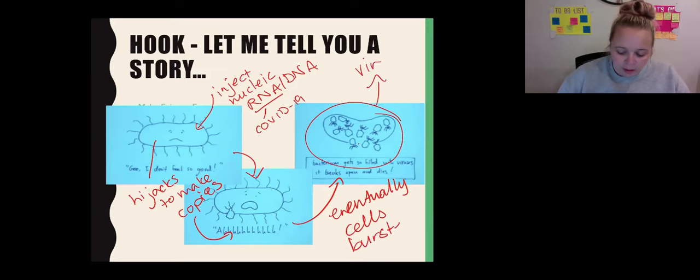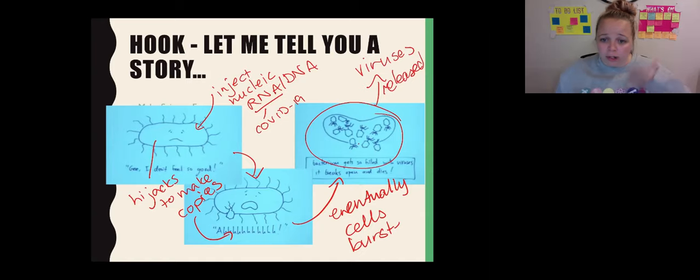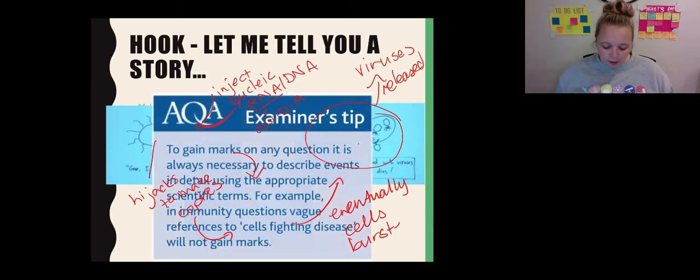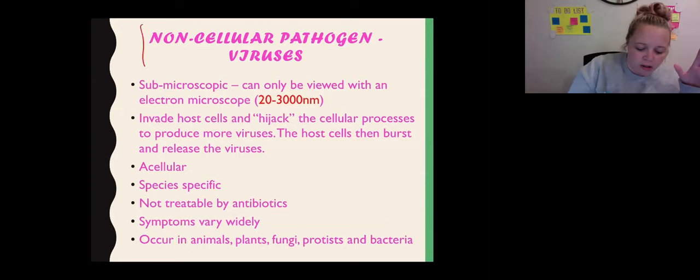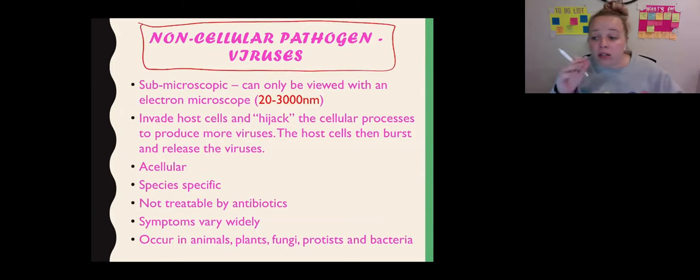And then they can go off and infect other cells. So they're pretty good at doing that. They inject their DNA, hijack the cell to make copies of themselves, burst out of them, and then go and can infect a whole bunch of other cells. So these guys are really small.